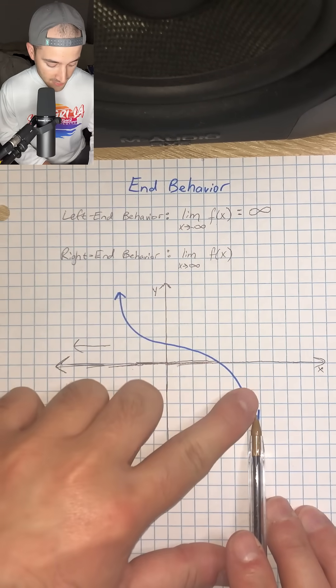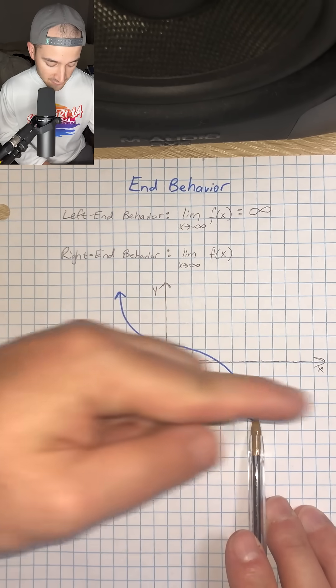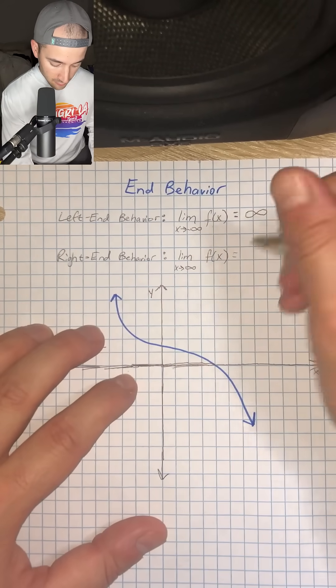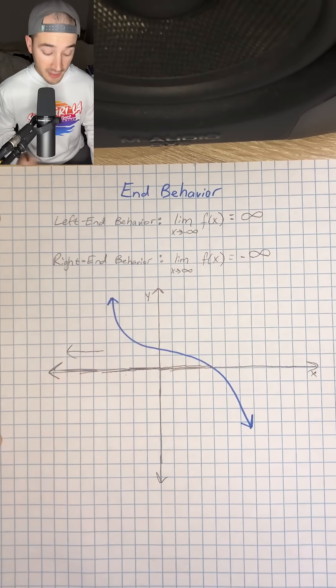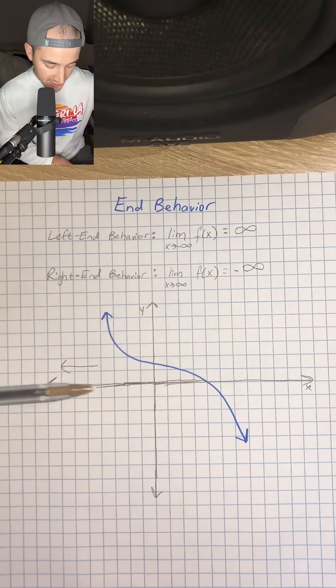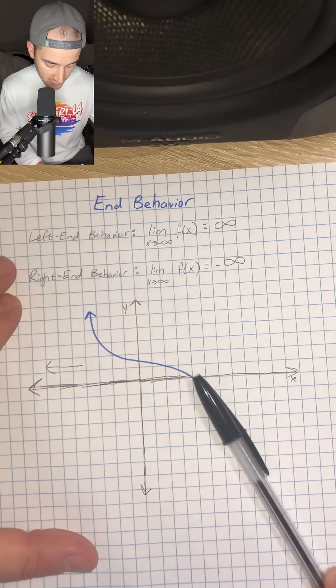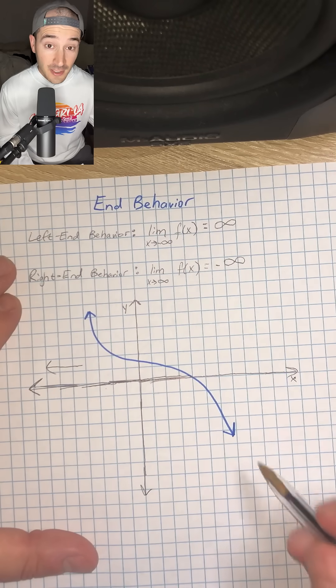So that means that the limit as x approaches positive infinity on the x value is going to be equal to negative infinity. Again, because our right end behavior, as x goes to the right, our function is going down towards negative infinity because it's going to continue forever.